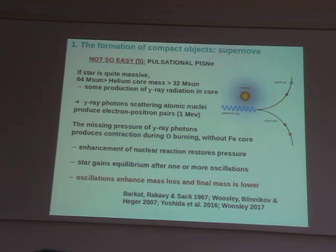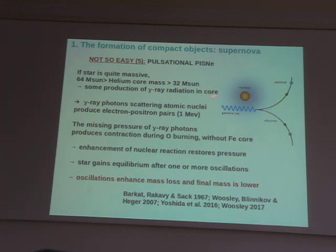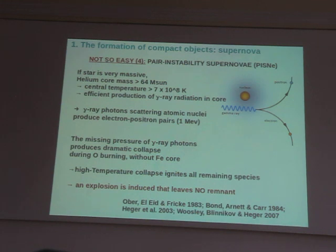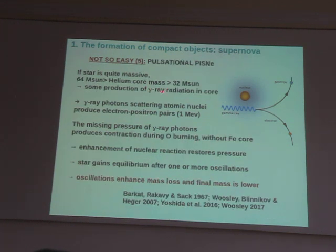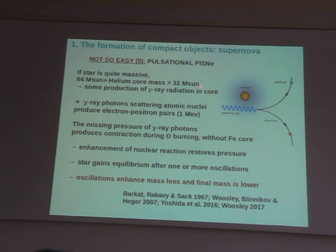There is also a smaller version of pair instability supernova called pulsational pair instability supernova. If a star has a helium core mass that reaches the 60-something solar mass threshold, it is completely destroyed leaving no remnant. But what happens if the helium core mass is massive but not so massive — say between 32 and 64 solar masses? Above about 30 solar masses, there will be some production of gamma-ray photons which can lead to the formation of electron-positron pairs, but this is not as efficient as in the full pair instability case.